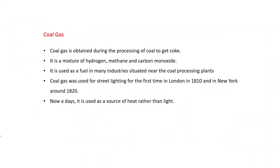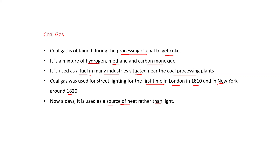Coal gas is obtained during the processing of coal to get coke. It is a mixture of hydrogen, methane, and carbon monoxide. It is used as a fuel in many industries situated near coal processing plants. Coal gas was used for street lighting for the first time in London in 1810 and in New York around 1820, but nowadays it is used as a source of heat rather than light.